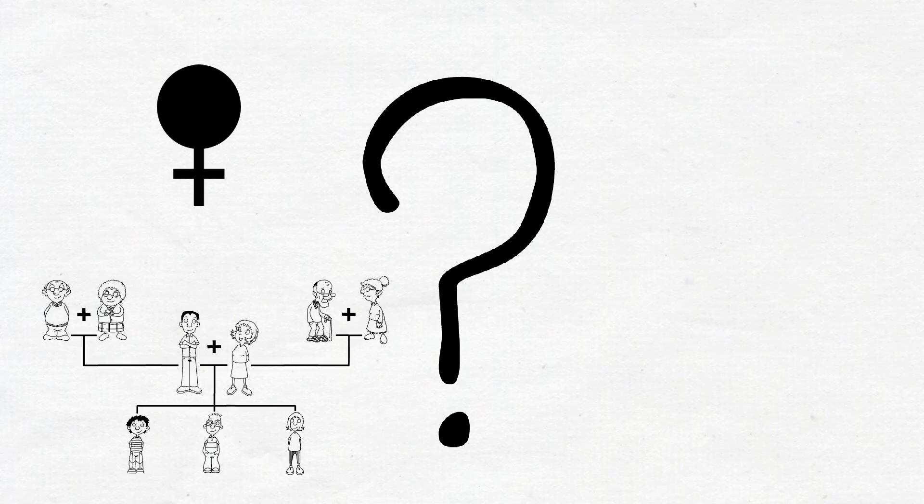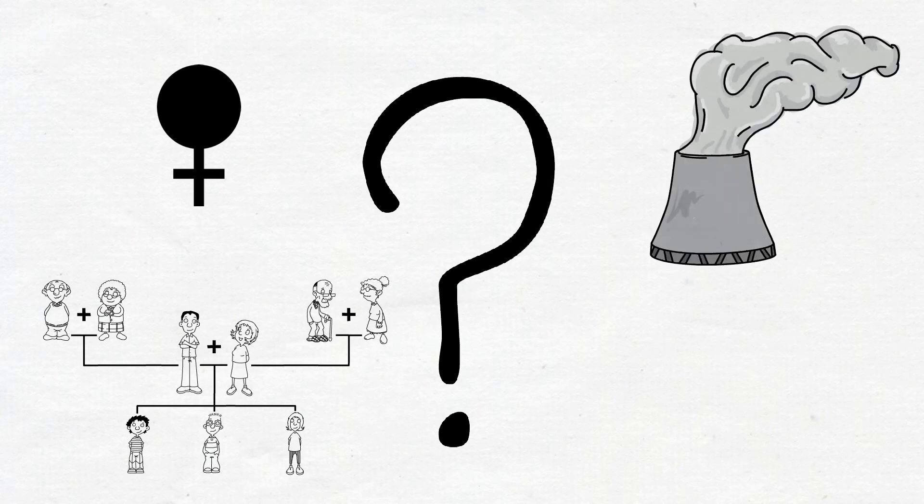No one really knows why autoimmune diseases happen. What we know is that women are more likely to get an autoimmune disease compared to men, that a positive family history increases the risk, as well as some environmental factors like infections and exposure to chemicals. The fact is that you can't catch the disease from other people.